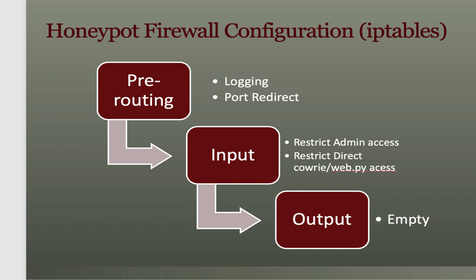On the honeypot itself we use firewalling, but we actually don't block anything. The honeypot is Linux-based, so we're dealing with iptables. We use three tables in iptables. Pre-routing is classically used for NAT, but we use it for two things: logging and port redirection. We log in the pre-routing table — a bit unusual — because we want to log the destination port before we redirect it to Cowrie. An inbound packet on port 22 will be redirected to port 2222 where Cowrie is listening, and similarly for Telnet, HTTP, and web.